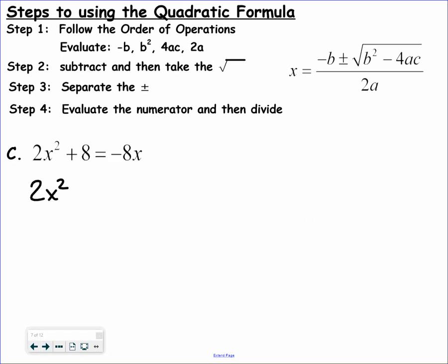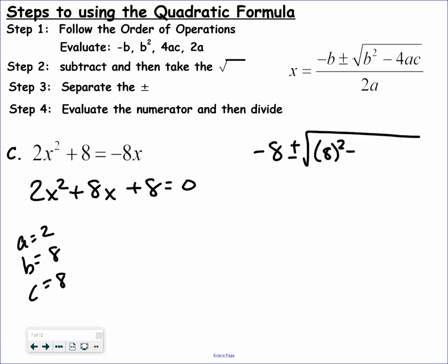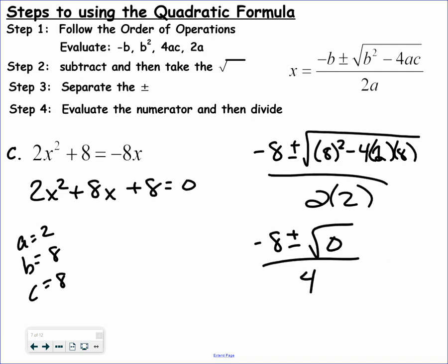I need it to equal 0, so I'm going to rewrite the question by adding 8x and put it in standard form. So A is 2, B is 8, and C is 8. Negative B plus or minus the square root of B squared minus 4AC, all over 2A. What happens if I end up getting a 0? Remember, plus or minus 0 — the square root of 0 is 0, so negative 8 plus 0 is still negative 8, and negative 8 minus 0 is still negative 8. So instead of two answers, I'm only going to have one answer: negative 8 divided by 4, which is negative 2.